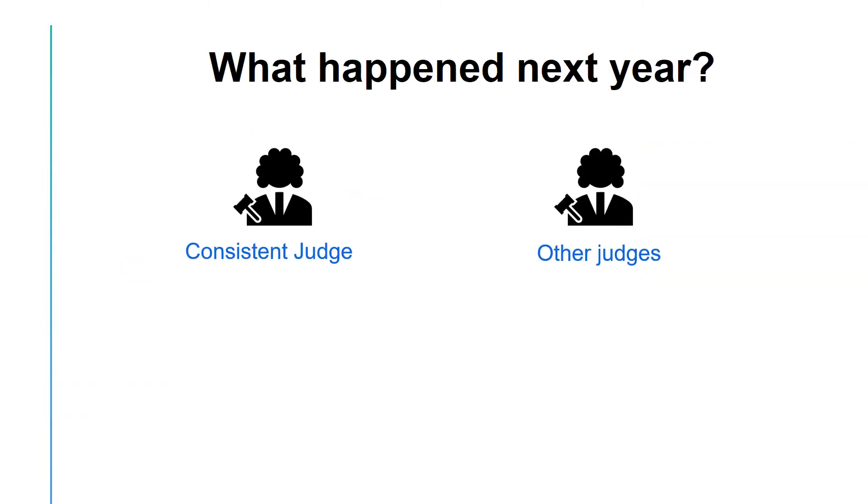They were thinking maybe they can ask the top 15% to teach the rest of the judges how to do better. Interestingly, however, when they repeated the experiment next year, a totally different group of judges replaced the previous group of good judges. There was a high degree of variability.